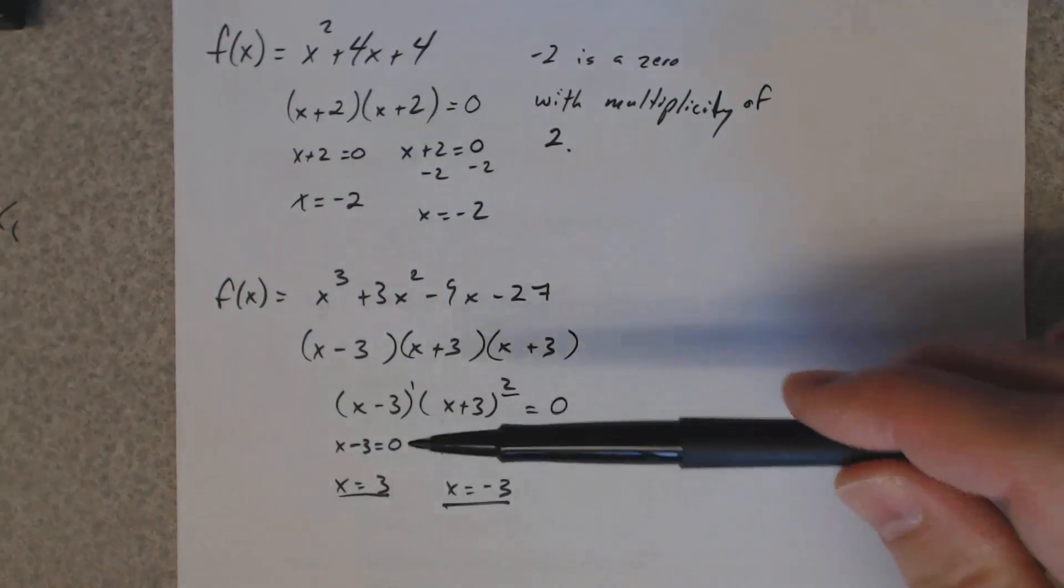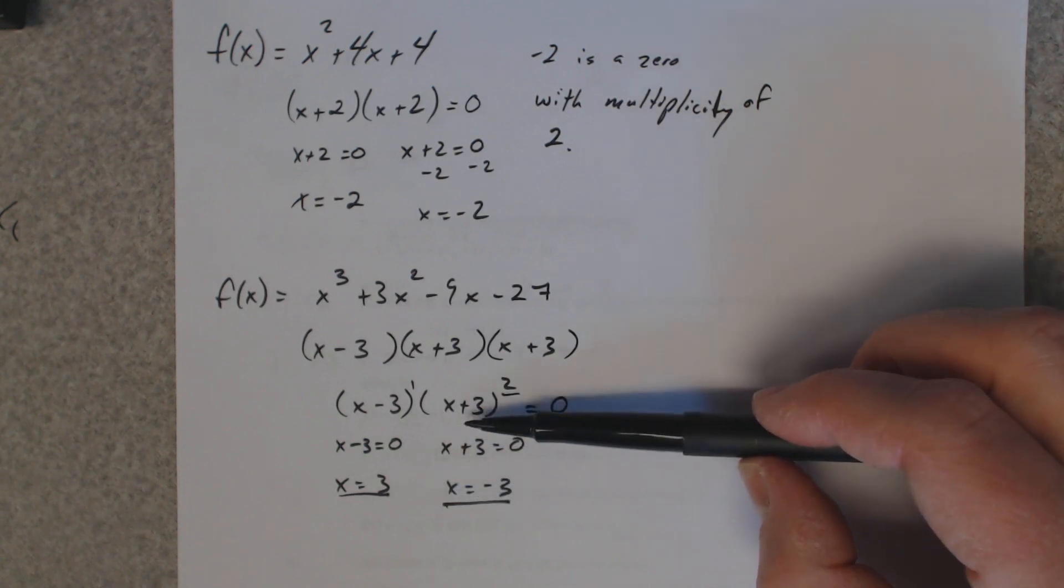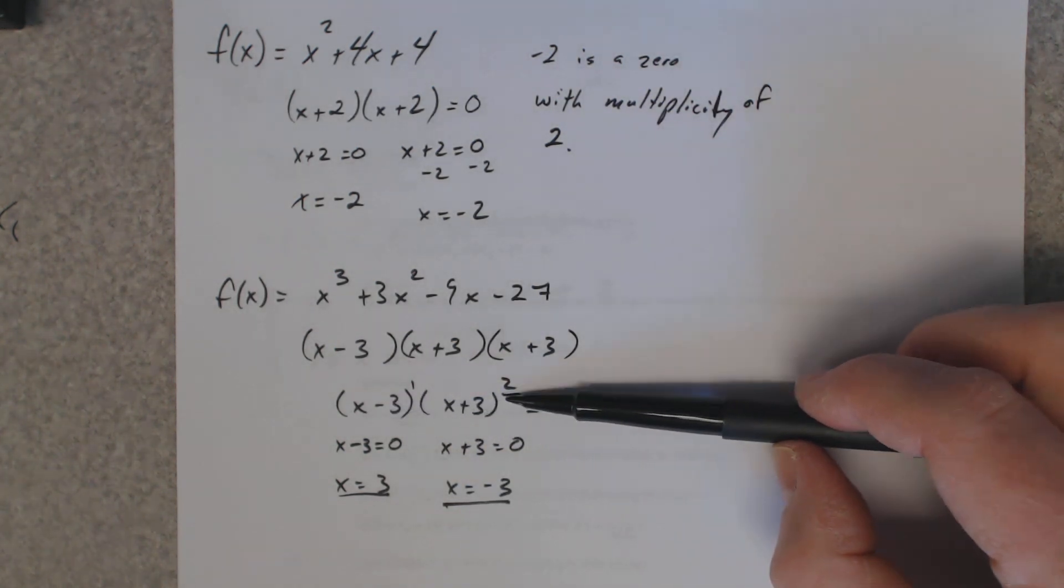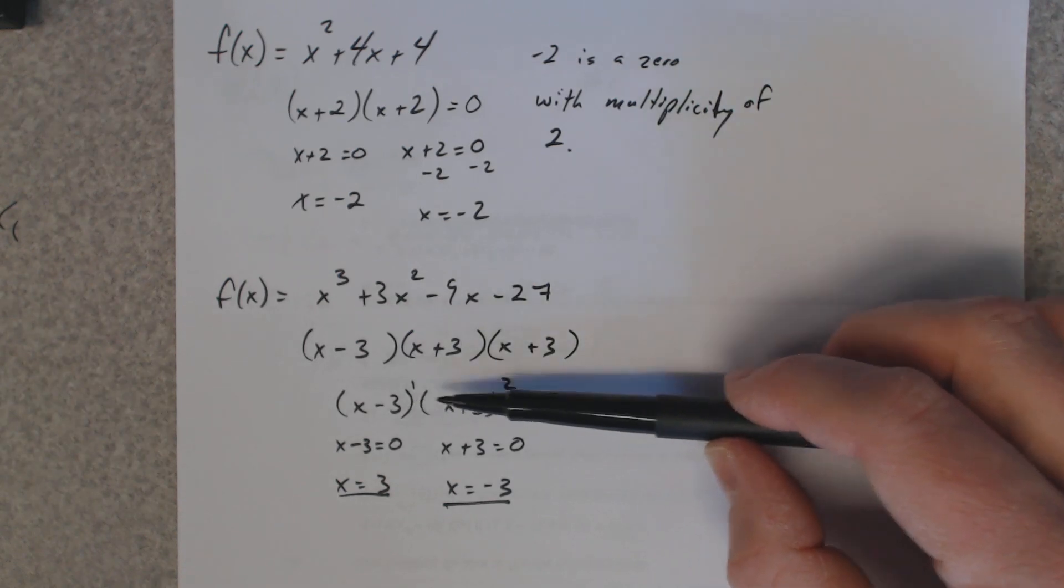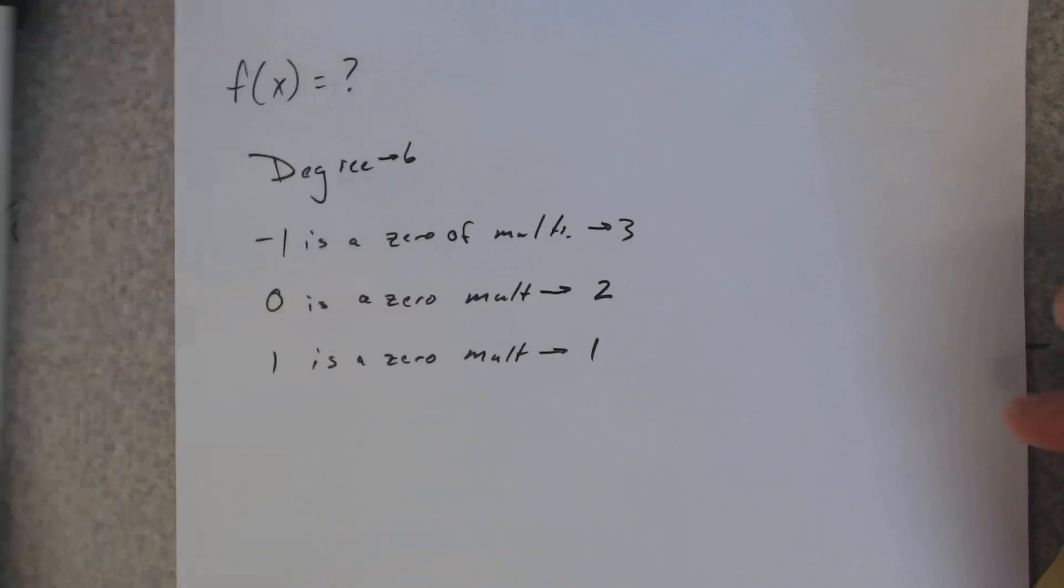So what we're going to do then for this question is working in reverse. They're going to give you the zeros, so that means we know the factors, and they tell you what the multiplicities are on those factors.